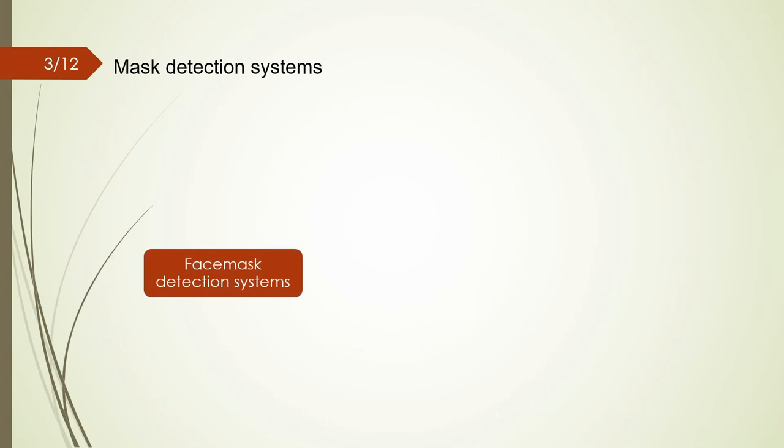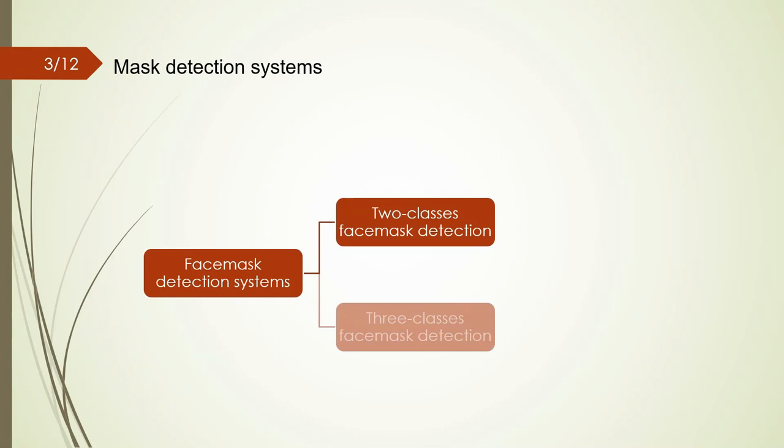Face mask detection systems are generally divided into two categories, two-class and three-class face mask detection systems. In the two-class systems, the people in the picture are divided into only two groups, with and without face masks.